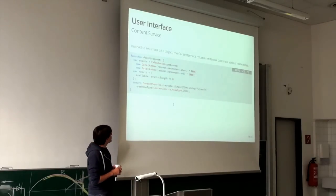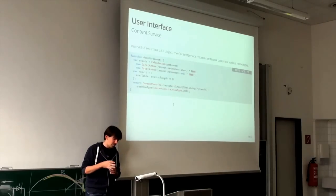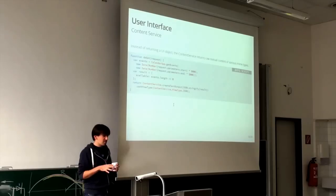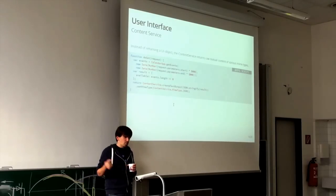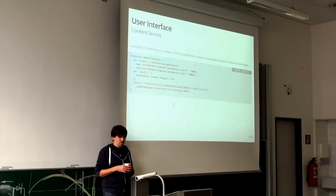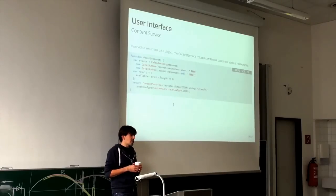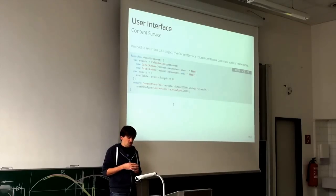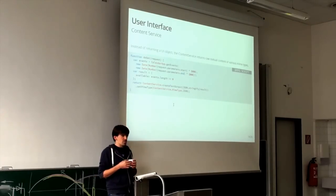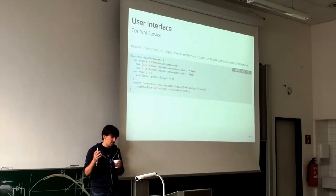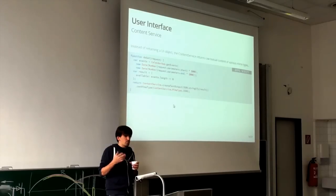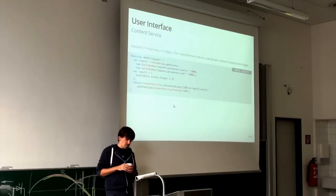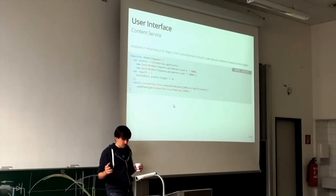The last way to make output — not actually a user interface but just an output — is Content Service. It's similar to HTML Service except that you can output raw text with a certain MIME type. For example, you can make scripts that output JSON or XML. So you can basically create your own APIs with Apps Script: get some data with doGet or doPost, process it, then output as text. Supported formats include JSON, XML, RSS, ATOM, or plain text.